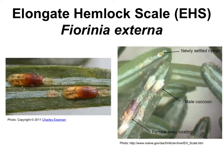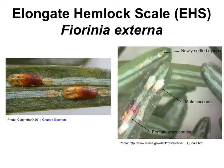The first insect pest we're going to talk about is the elongate hemlock scale, EHS for short, Fiorinia externa. Here is shown the female, which is wingless and legless, encased in a cover, about 2mm long. Here's another female shown here. Here is a male in its cocoon, a little bit smaller than the female, and even smaller are these little nymphs, which are another stage in the life cycle.